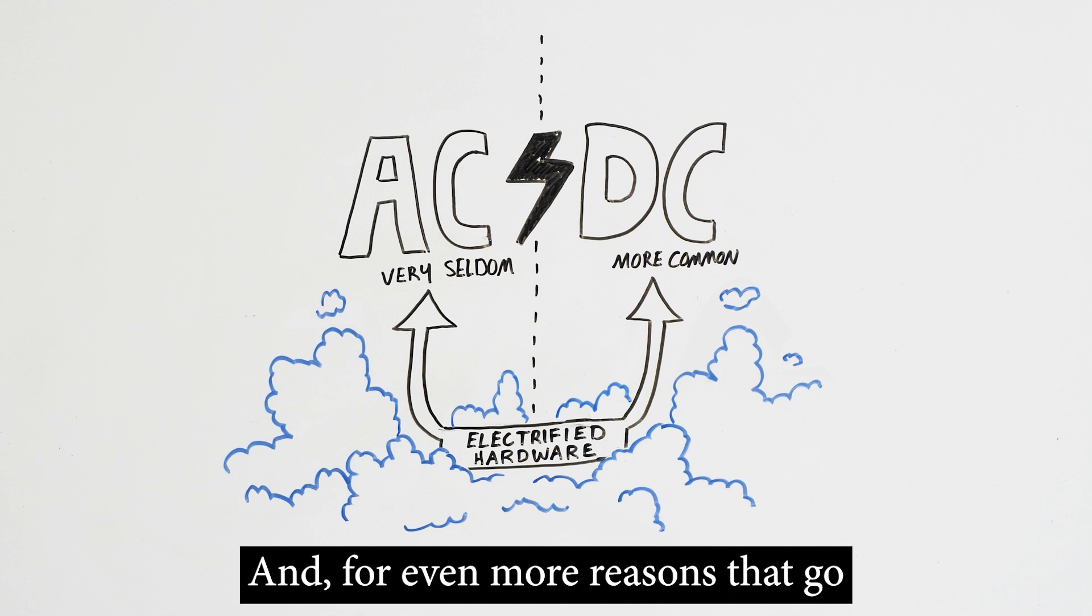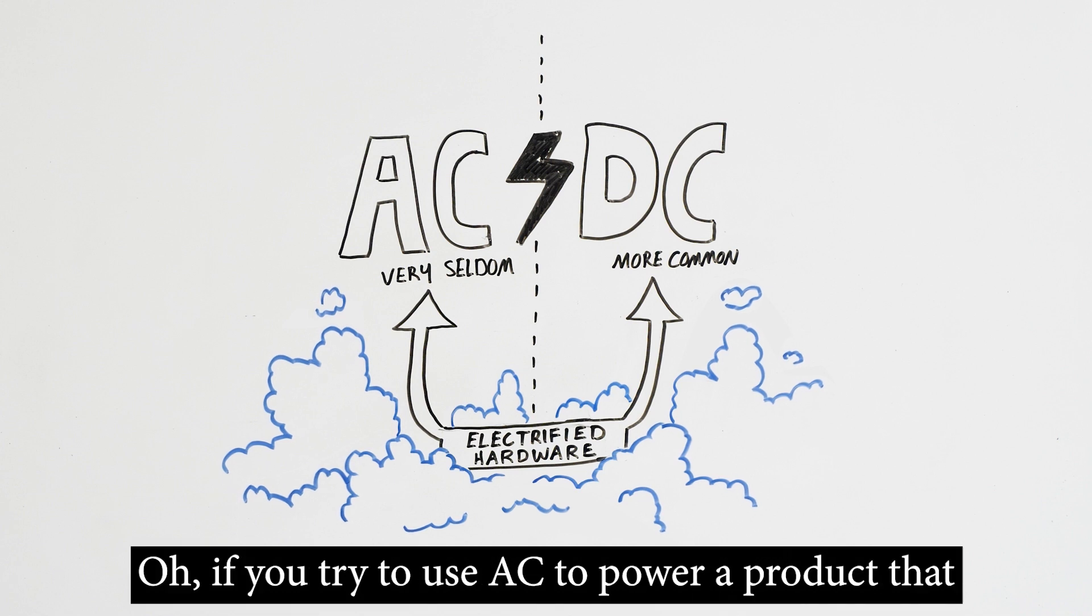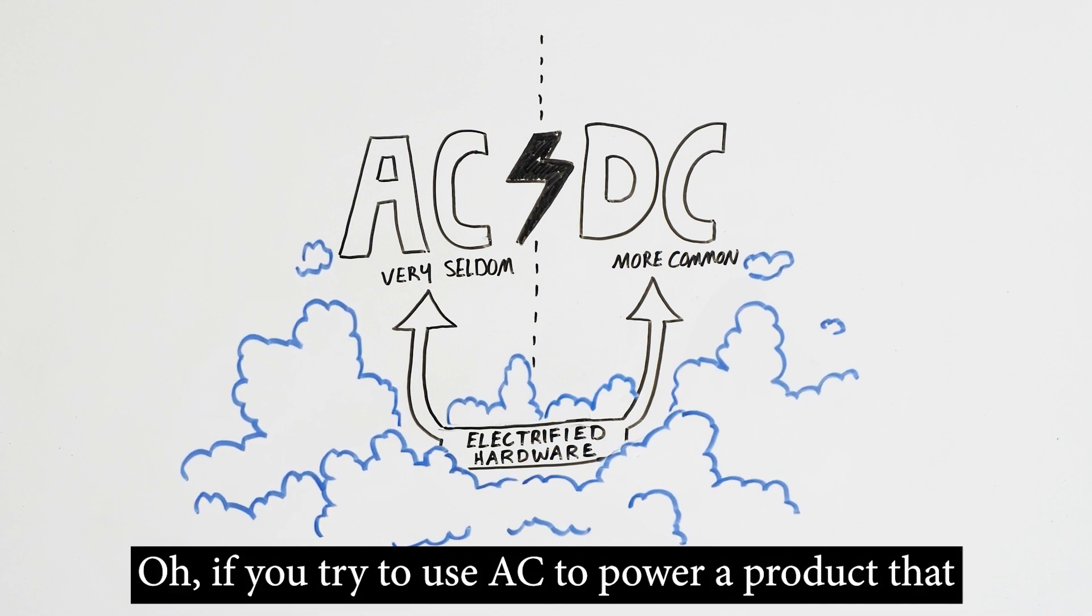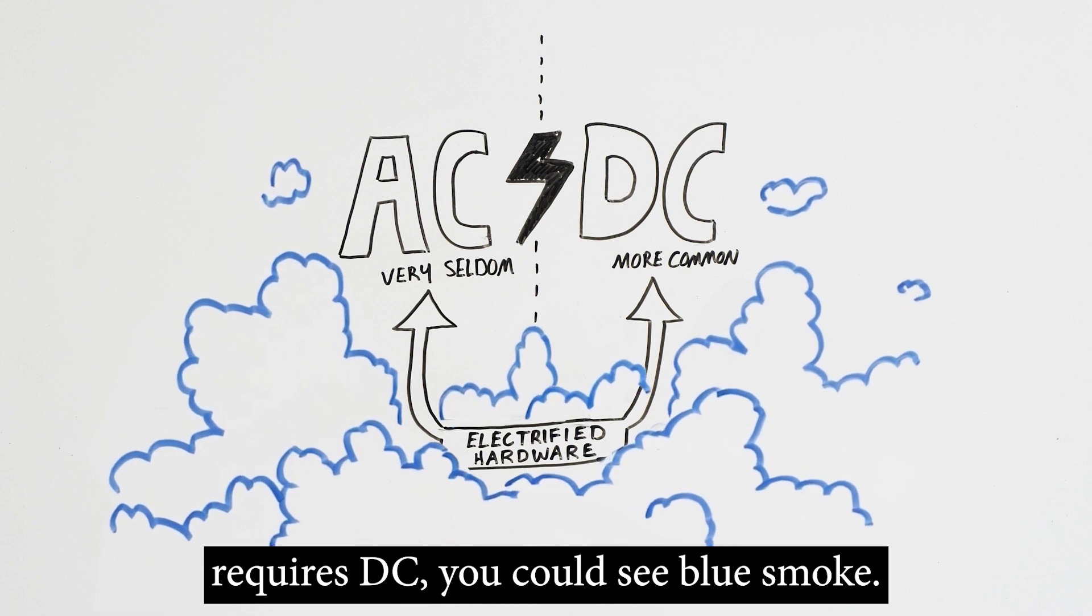And, for even more reasons that go beyond the scope of this video, power supplies are the most popular power source for electrified hardware circuits. Oh, if you try to use AC to power a product that requires DC, you could see blue smoke.